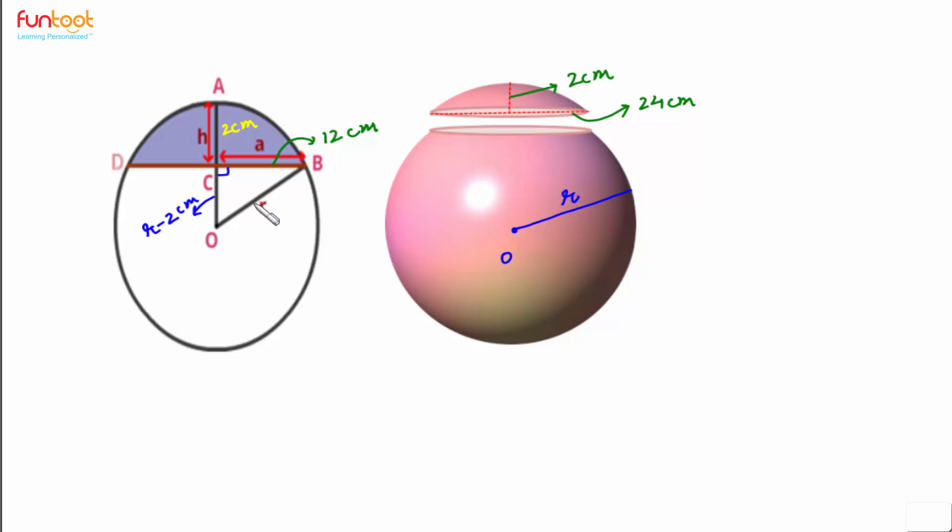By using Pythagoras theorem here, we can form an equation with variable R and solve it to find the value of R, which is the radius of the spherical vessel. With this approach, let's complete the solution. So in right triangle OCB, we will have OB squared is equal to CO squared plus BC squared. This we obtained from Pythagoras theorem.